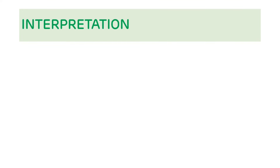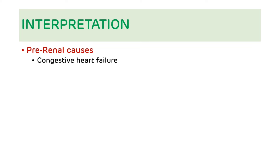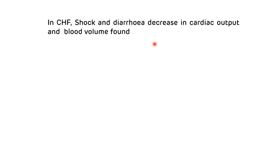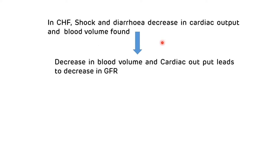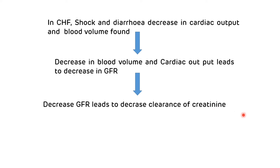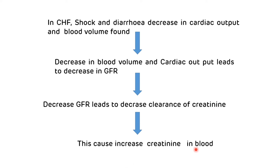Interpretation of serum creatinine values: serum creatinine level will be increased due to various causes. Pre-renal causes include congestive heart failure, shock, diarrhea, uncontrolled diabetes mellitus, and use of diuretics. In congestive heart failure, shock, and diarrhea, there is a decrease in cardiac output and blood volume, which results in decreased GFR. Decreased GFR leads to decreased clearance of creatinine and ultimately increased creatinine in the blood.